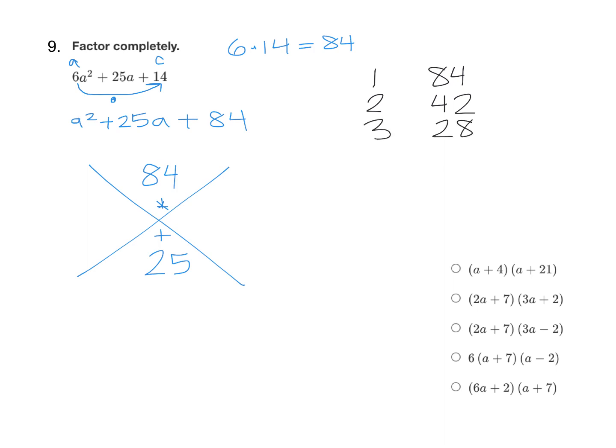If we do 84 divided by 4, that's 21. 84 divided by 6 is 14. 84 divided by 7 is 12. 8 does not go into 84. Neither does 9 or 10 or 11. So that's all of our factor pairs.